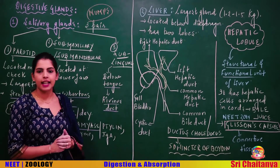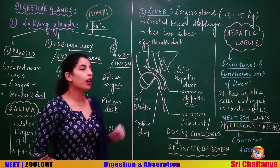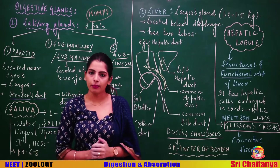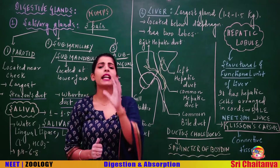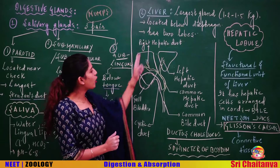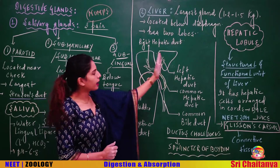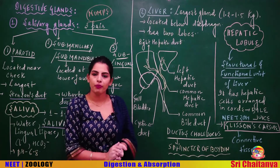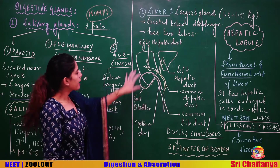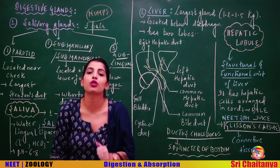The next gland is the largest gland in the body — the liver. It is located below the diaphragm. Looking at the lobes of the liver, it has two lobes: the right lobe and the left lobe. The basic function of the liver is the formation of bile juice.